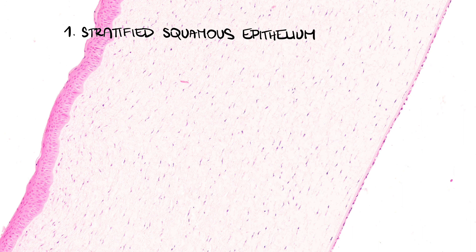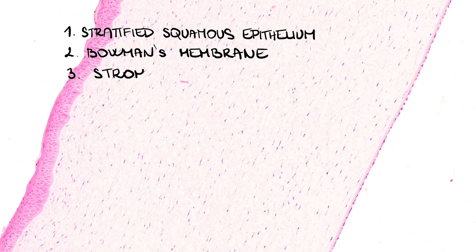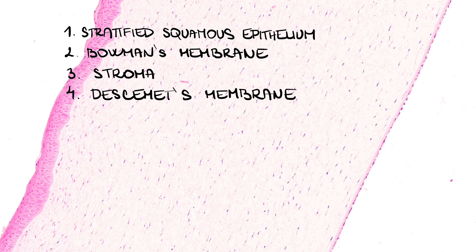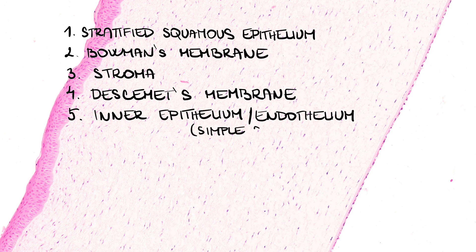Let's sum this up. The cornea has five layers. First, stratified squamous epithelium with Bowman's membrane underneath, which is a normal basal membrane. Next we have the stroma, made up of 60 lamellae organized in a specific pattern — it resembles dense regular connective tissue. Then we have Descemet's membrane, which is really a thickened basal lamina. And the last layer is the inner epithelium, also called endothelium, made of one layer of squamous cells.